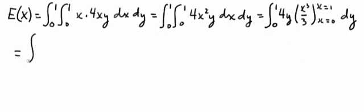So we get the integral from 0 to 1 of 4y, and then x cubed over 3, when x is 1 is 1 third, and when x is 0, it's 0, so that just becomes 1 third.